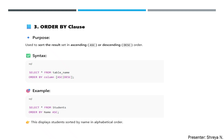Now the ORDER BY clause — ORDER BY basically performs sorting. In your previous semester's Data Structures subject, you must have studied sorting. ORDER BY does the same thing: it sorts the data in ascending order or descending order. There are specific keywords for each — ASC for ascending and DESC for descending.